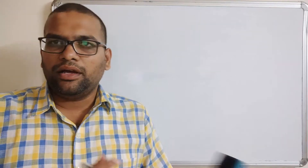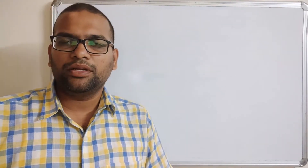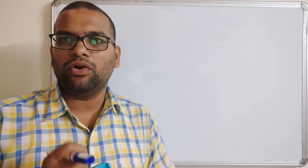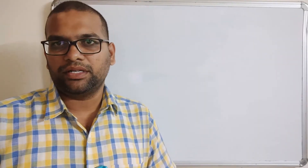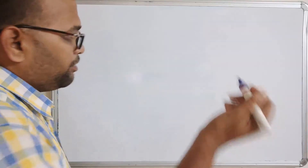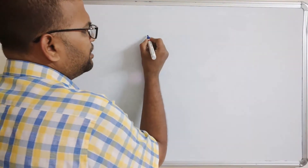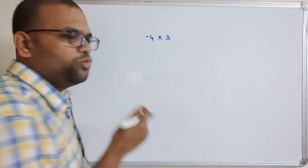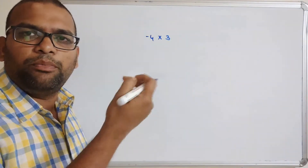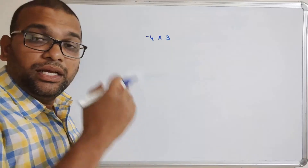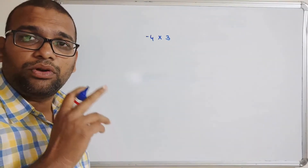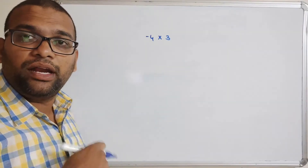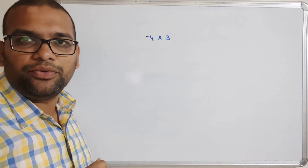Just recalling the concept: Booth's algorithm is used to perform multiplication on signed binary numbers. In our previous example, we saw minus four into three — that means we took one negative number and one positive number and performed the multiplication. In today's session, we'll discuss the product of two negative numbers, so we need to get the result as a positive value.